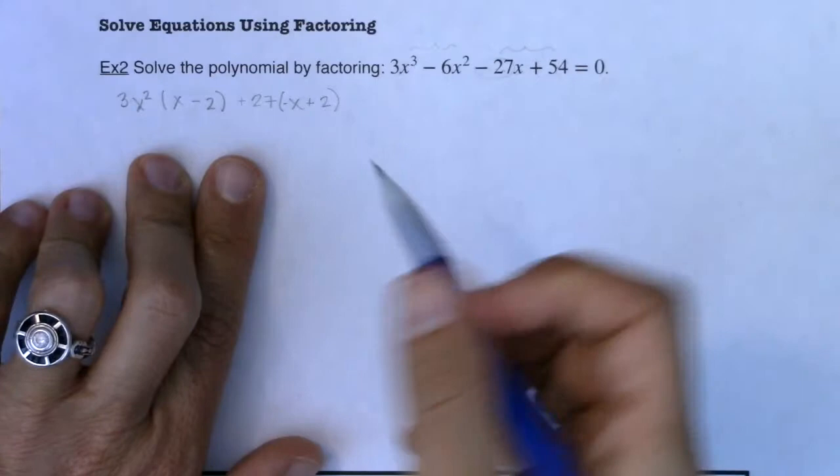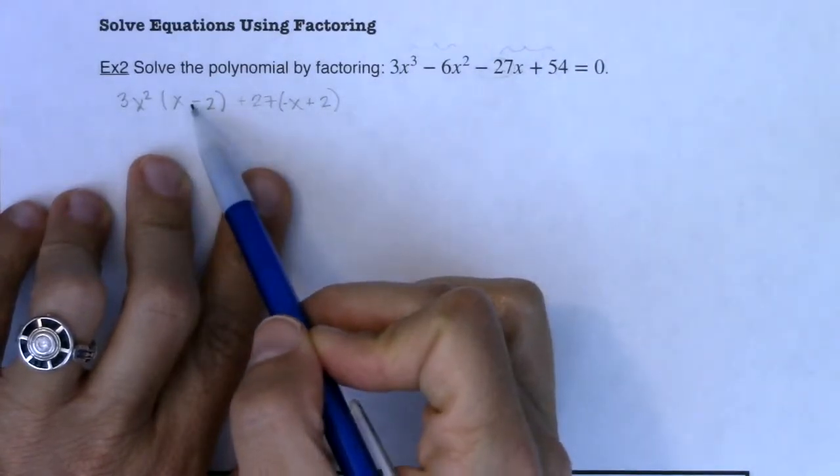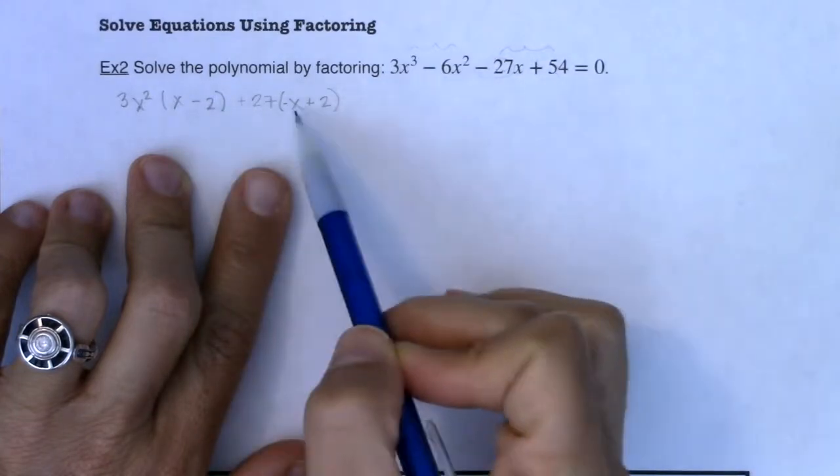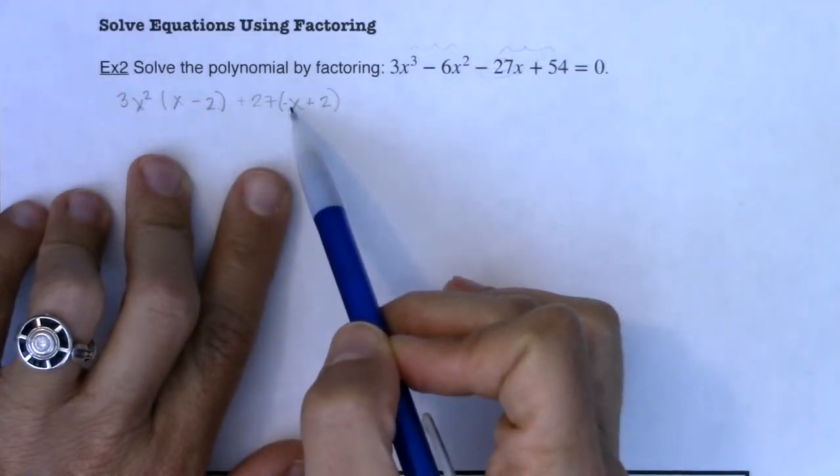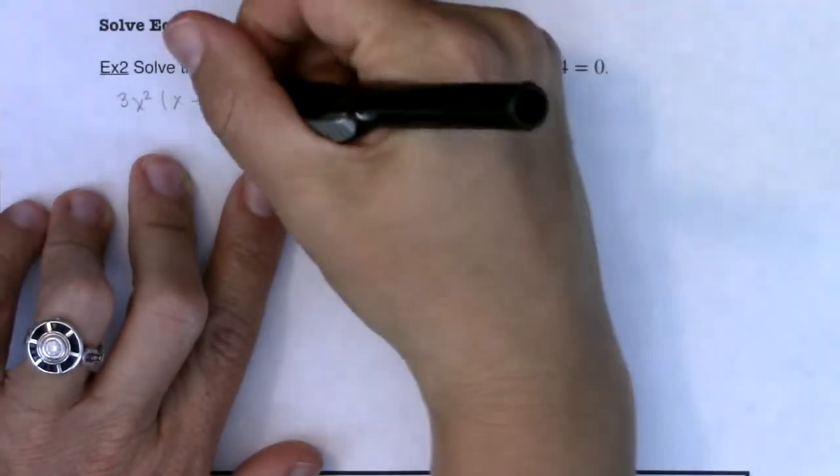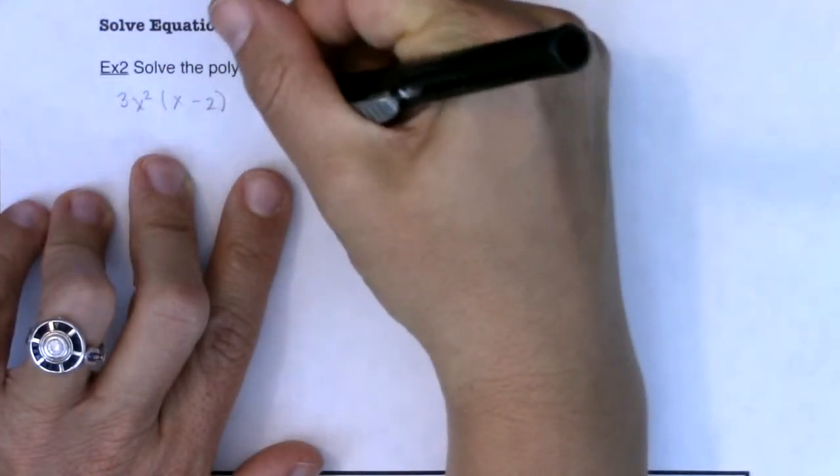but when you try and do factoring by grouping you'd like these binomials to be the exact same term, right? So here was x minus 2. It doesn't do me a whole lot of good if I have negative x plus 2. I'd like this to also be x minus 2 which is why I'm going to change the signs back to what I originally had.